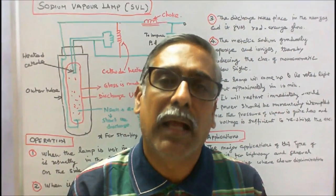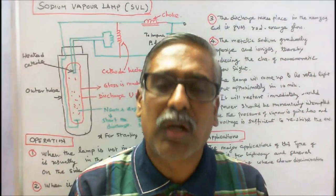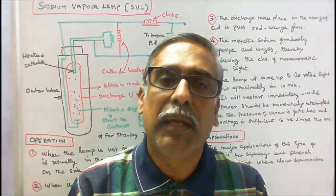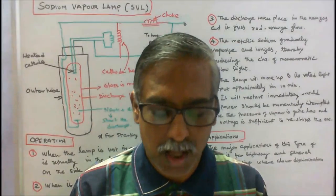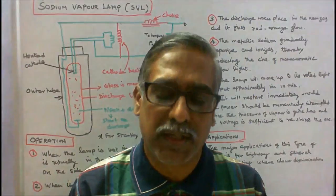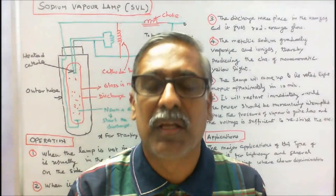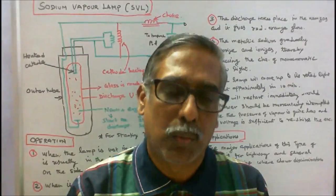Neon gas serves to start discharge and to develop enough heat to vaporize sodium. Argon has lower glow voltage. Argon helps the smaller lamps start at a lower voltage.